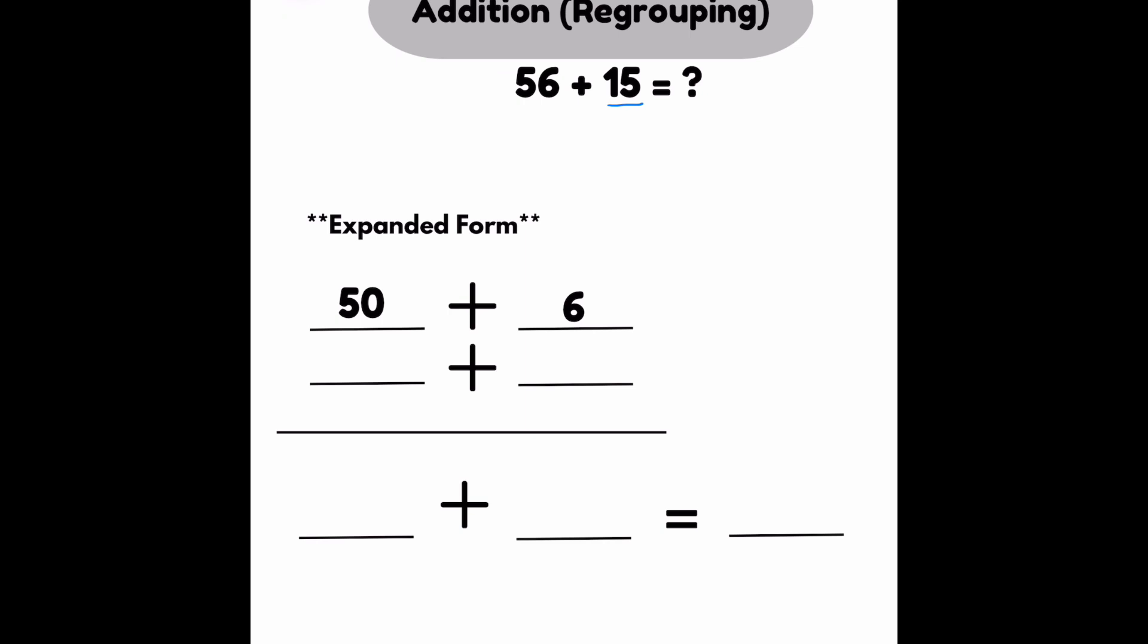So looking at the 10s place, I have 1 ten, which equals 10. Then looking at the 1s place, I only have 5. I'm going to add straight down. So 50 plus 10 is 60. 6 plus 5 is 11.